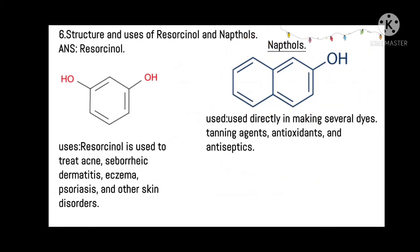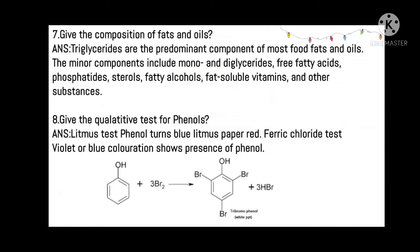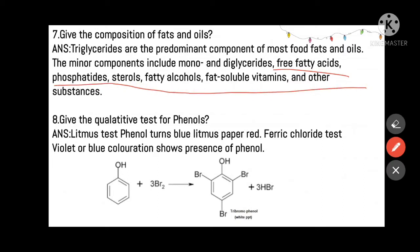Give the composition of fats and oils. Fats and oils are basically composed of triglycerides as the most predominant component. Minor components include mono- and diglycerides, free fatty acids, phosphates, sterols, fatty alcohols, fat-soluble vitamins, and other substances.